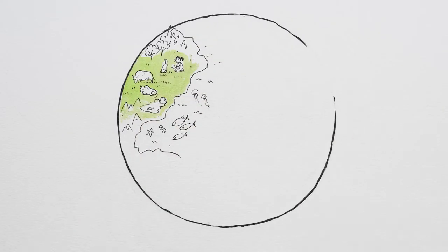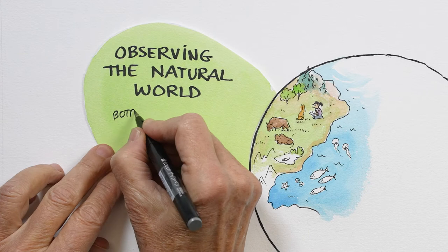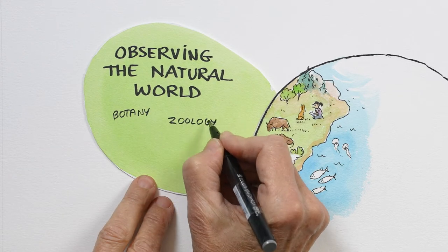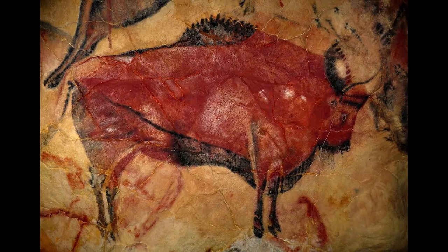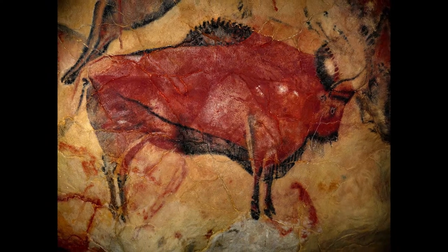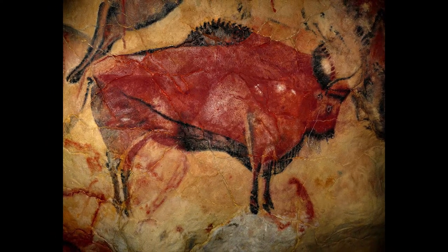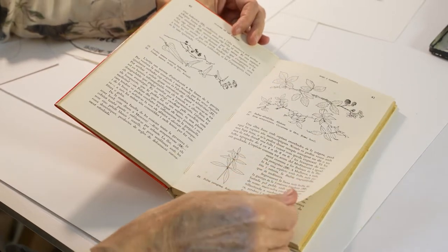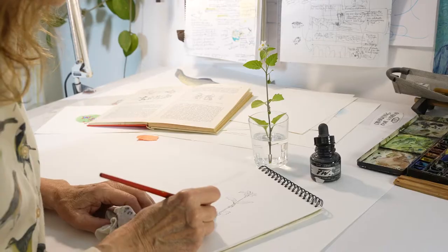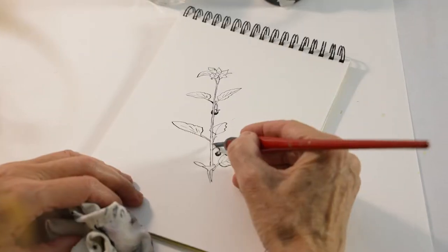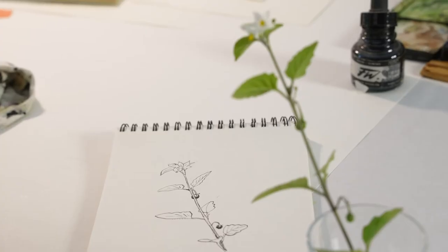The most basic form of science is observing the natural world around us, and illustrating it has a very long history. There's this incredible bison from Altamira in Spain — it's from many thousands of years ago, but it's so well drawn that it's identifiable as a particular species: Bison priscus, or steppe bison. Amazing. Observing nature is how I got my start as an illustrator. When I was 19, my dad wrote a book about the plants of the Balearic Islands, and I did the drawings. We'd go out and collect plants, bring them home, and I'd draw them in pen and ink.